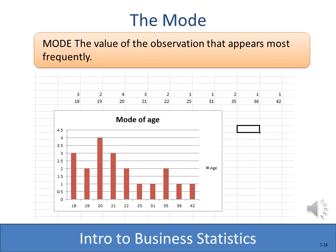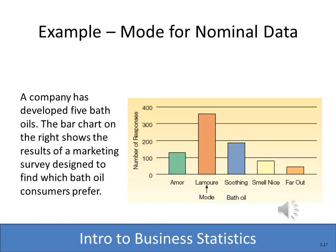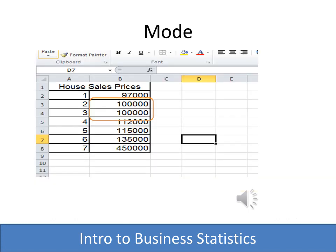The mode is another measure of central tendency — it's very simple. It's simply the most often occurring value. With the ages of the statistics class, I've created a frequency distribution, and the age that occurs the most is 20 — there are four occurrences of that, so that would be the mode. You can see that visually in the column chart or bar chart below. We can also have a mode for nominal or categorical data — in that case, we're simply counting the occurrences of that particular category. With house selling prices, the price that occurs most often is 100,000, so 100,000 would be the mode.